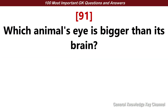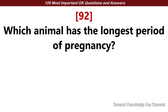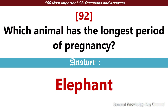Which animal's eye is bigger than its brain? Answer: Ostrich. Which animal has the longest period of pregnancy? Answer: Elephant.